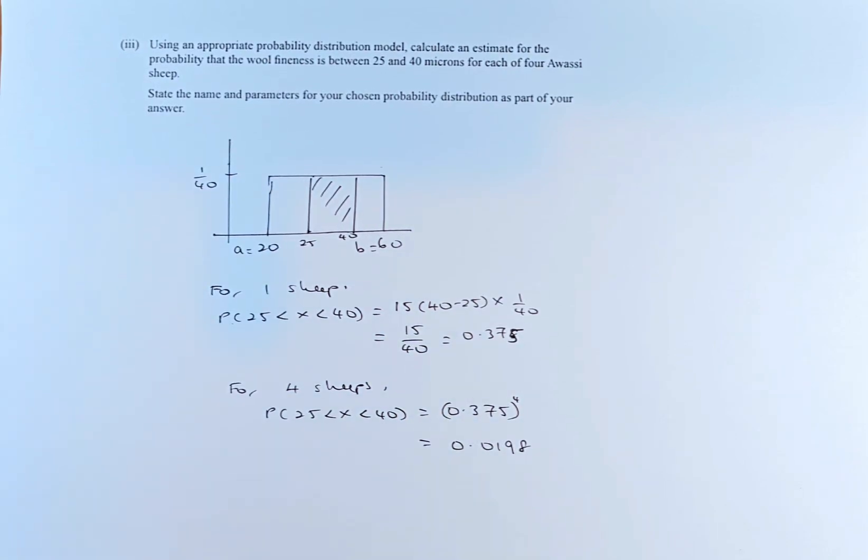Good day and welcome to video number 5 of the 2023 MCA Level 3 Statistics paper called Applied Probability Distribution in Solving Problems. In this video, we are going to solve uniform distribution, and this is a merit question. This is question 2B part 3.